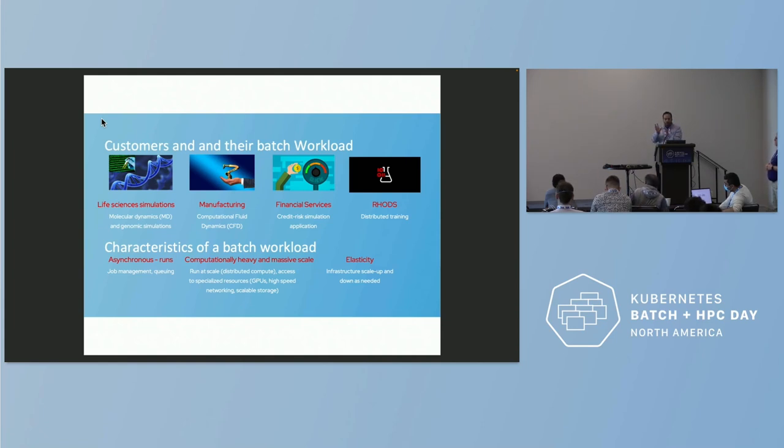When I hear all these customers, everything boils down into three characteristics. They come and repeat the characteristics of the batch workload they're looking for. One is asynchronous run. They have this job that needs to run asynchronously and complete to give me the result. These jobs are computationally heavy. They require GPUs, fast network, fast storage, and these are massive scale. And since they are running on cloud, they need some type of elasticity.